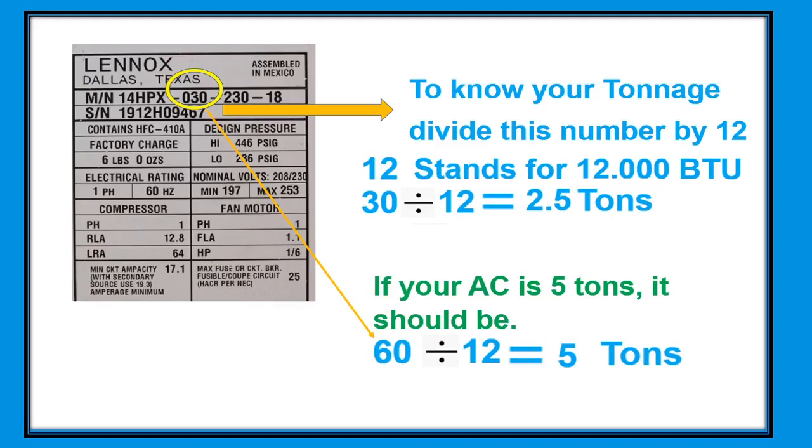Here in this example we have a Lennox air conditioning nameplate. To know your tonnage, divide this number by 12. Twelve stands for 12,000 BTU. So 30 divided by 12 equals 2.5 tons. This nameplate is 2.5 tons. If your AC is 5 tons, it should be 60 here. 60 divided by 12 equals 5 tons.